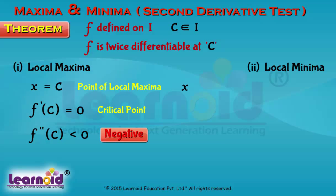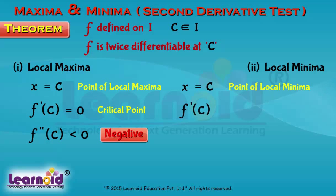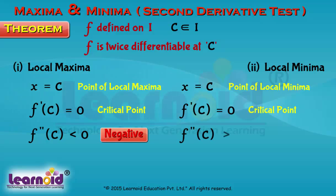x equals c is a point of local minima if f'(c) equals 0 and f''(c) is greater than 0, meaning positive.